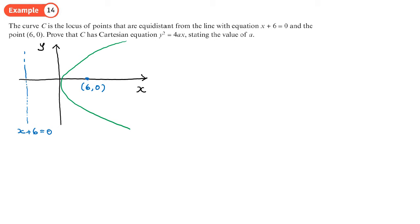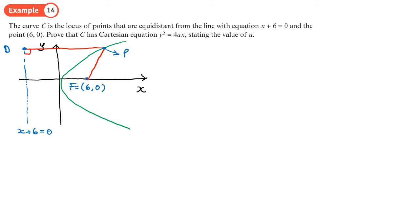We're going to show algebraically that the general point is the same distance from the focus as from the directrix. We'll label the focus F, a general point on the parabola P, and the foot of the perpendicular to the directrix D. Because the curve is a locus, the length FP equals the length DP, which means FP squared equals DP squared.